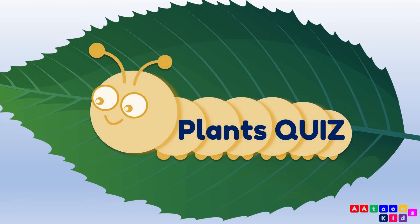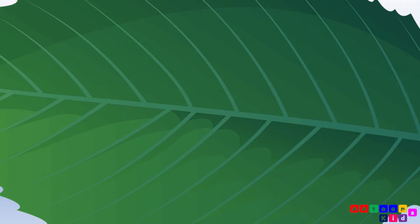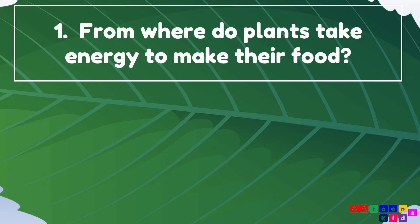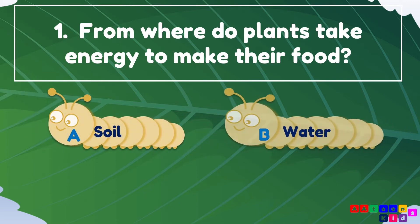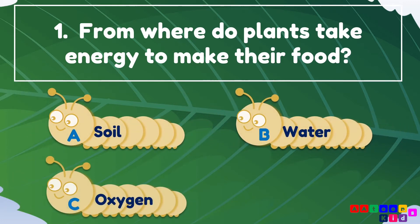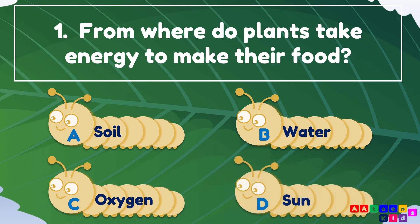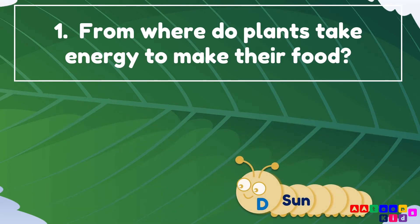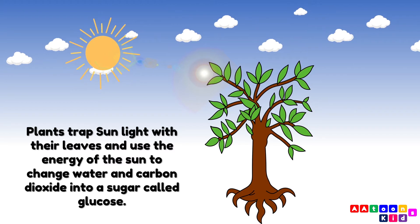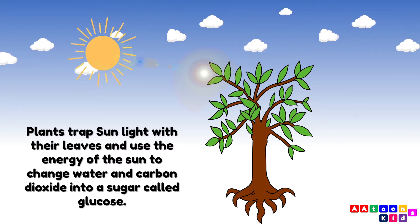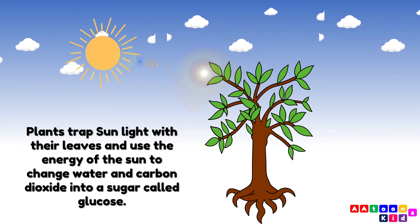From where do plants take energy to make their food? Soil, water, oxygen, or sun? The answer is sun. Plants trap sunlight with their leaves and use the energy of the sun to change water and carbon dioxide into food.